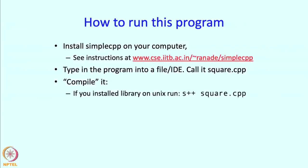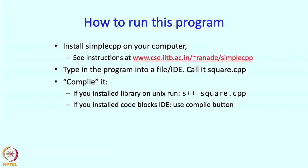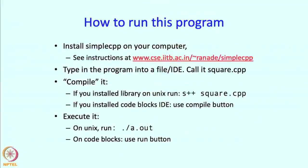Then you have to compile it. So compilation can happen by typing s++ square.cpp if you installed a library on Unix. If you installed the Code Blocks IDE, then you simply have to press the compile button. Then you have to execute it. So on Unix you have to type ./a.out, which is the result of that compilation process. So we will explain to you what compilation means in a little bit. But the result of the compilation process is a file called a.out and you just have to execute it. On Code Blocks you just need to use the run button.